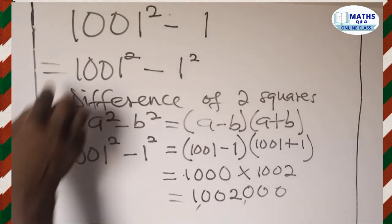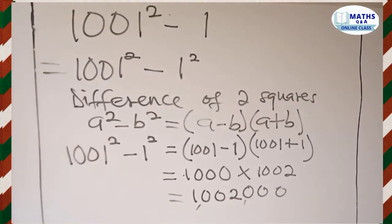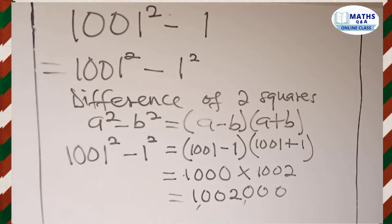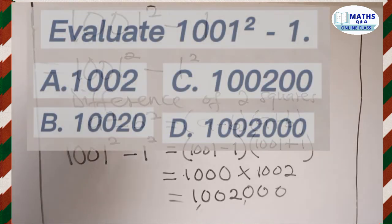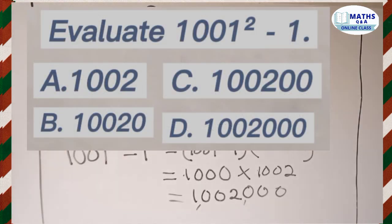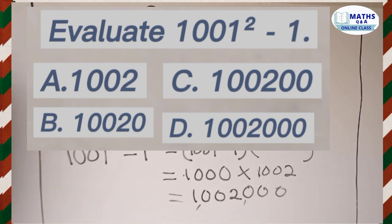So this is the final result when we evaluate 1001 squared minus 1. Looking back at the options given, the correct answer is D.